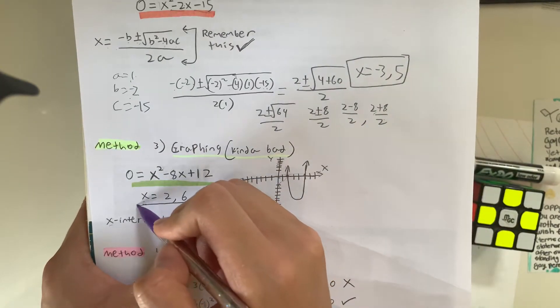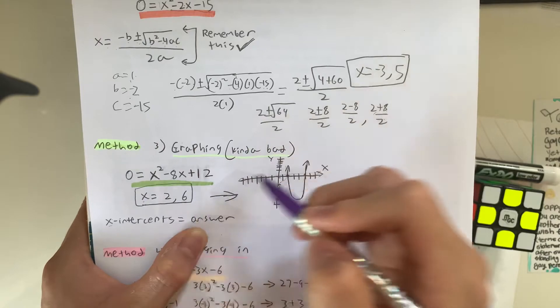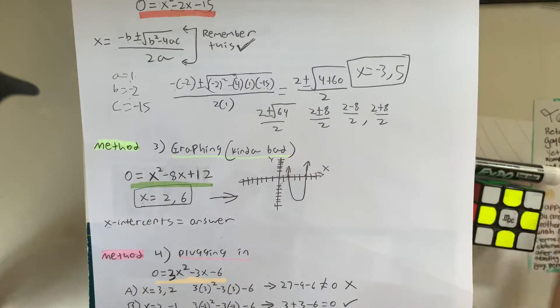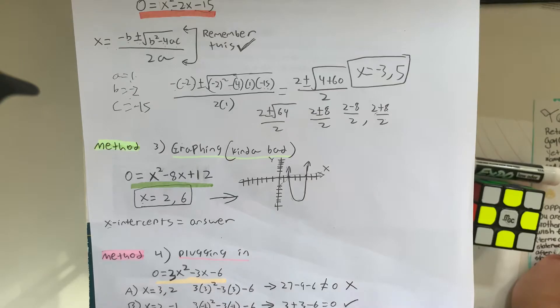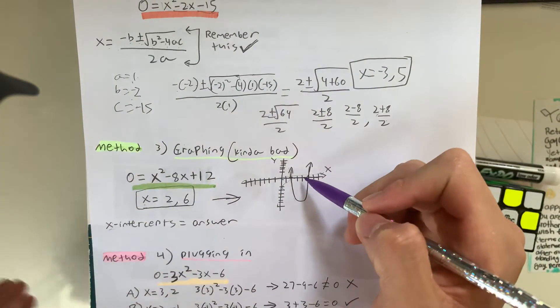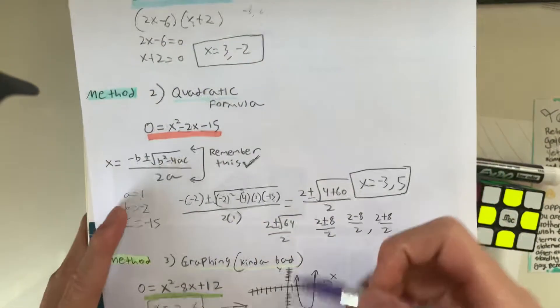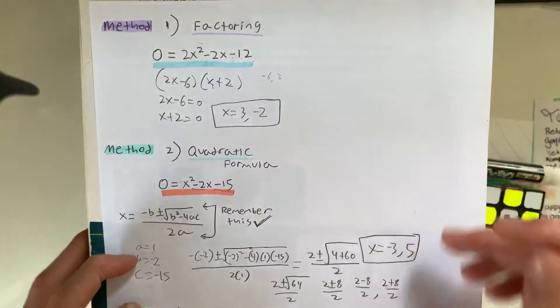So that's how you're going to use the graphing method. It's not a method I always advise, because sometimes, unless it's an integer, it's hard to tell what the answer is, so it's better to use any of the previous two methods of doing it.